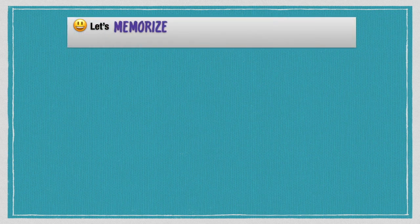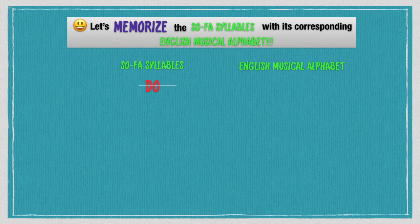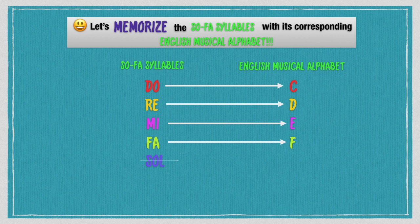Let's memorize the sofa syllables with its corresponding English musical alphabet. Do is C, re is D, mi is E, fa is F, sol is G, la is A.